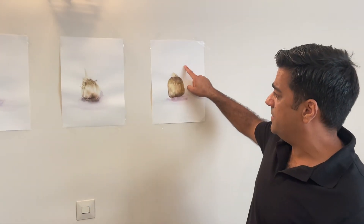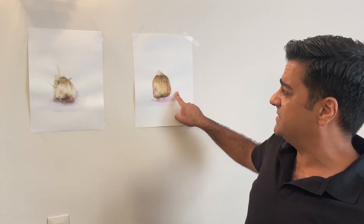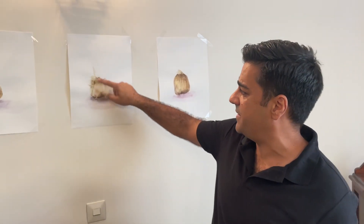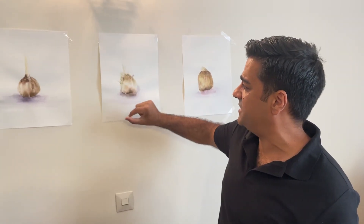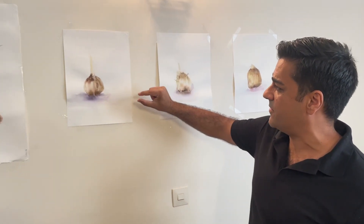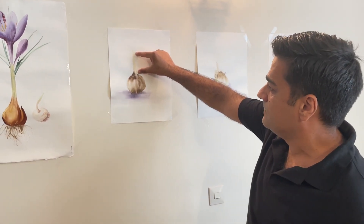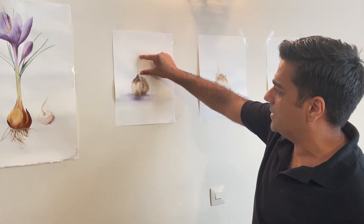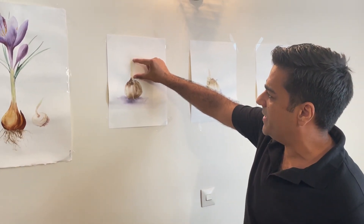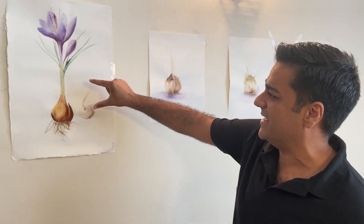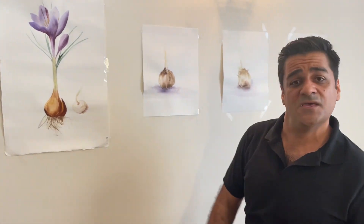To summarize the growth timeline: purchase bulbs in August, by September you have two-centimeter sprouts, by October five centimeters, and by November you can reach the flowering stage.